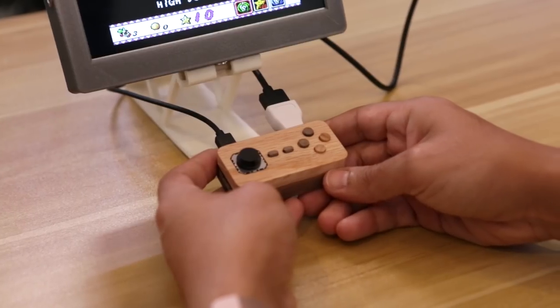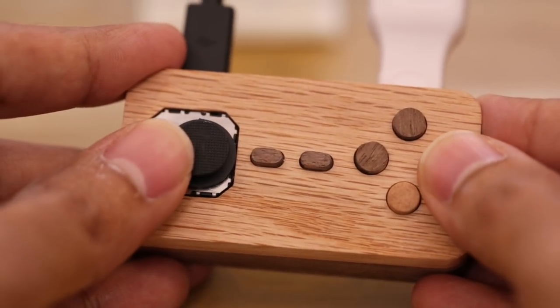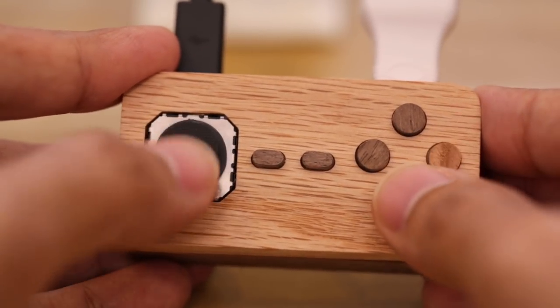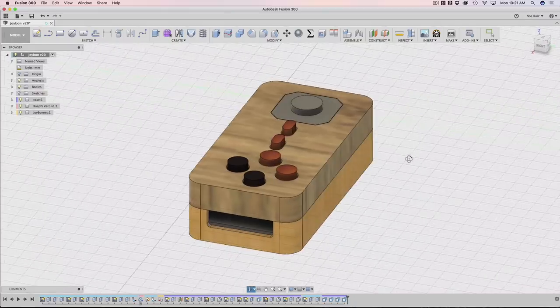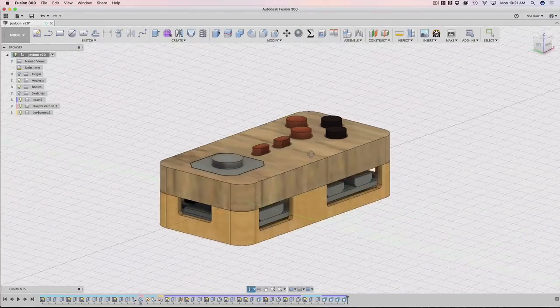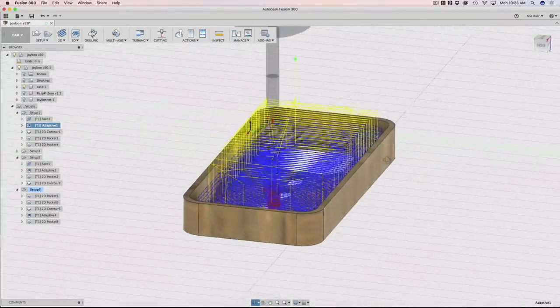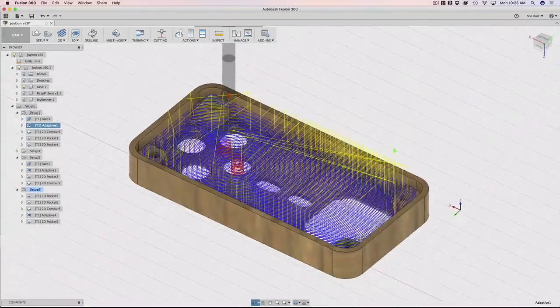In this video we'll take a look at the build process and learn how to CNC the case using the OtherMill Pro. I started by modeling the components in Fusion 360 so that I could design the case around the electronics. Then I used CAM tools to set up the toolpaths needed for telling the CNC machine how to cut the design.